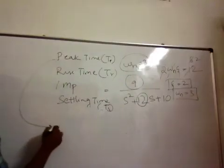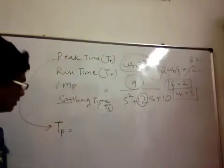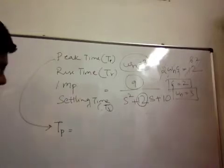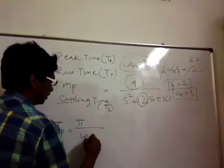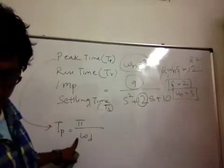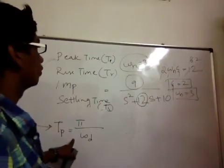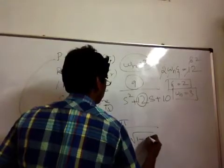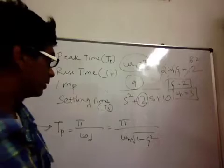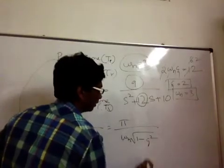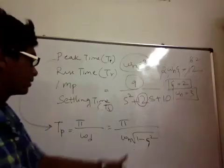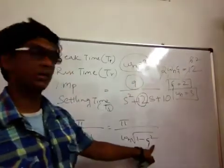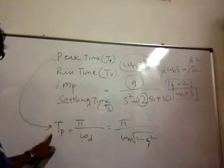So the formula to calculate peak time Tp is π / ωd. And ωd = ωn × √(1 - ζ²). So with ωn = 3, you substitute your ζ value here. Pi is 3.14. In this way you're going to get the peak time.